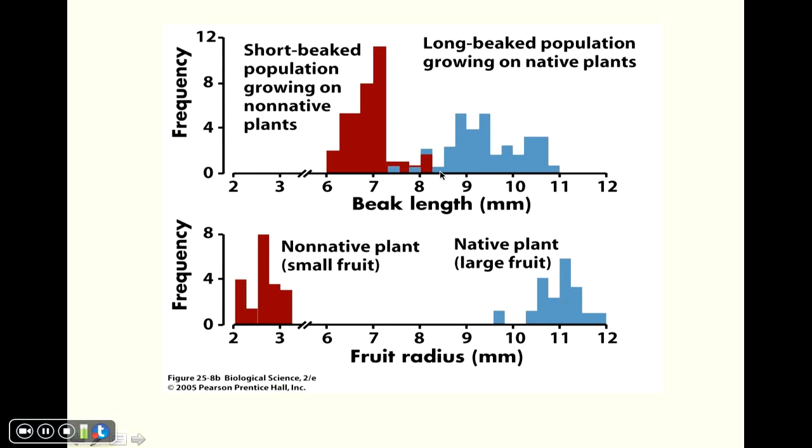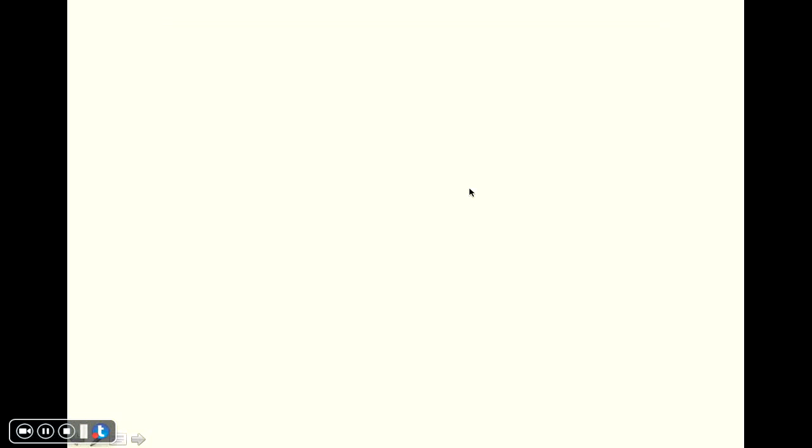So what we have happening here is essentially an example of disruptive selection. So the soapberry bugs on the native balloon plants, they tend to stay there. They tend not to mix a whole lot with the soapberry bugs living on the newly introduced plant. And so, over time, it's thought that these two populations of soapberry bugs will diverge into two separate species. Again, classic example of disruptive selection.